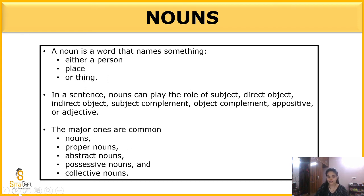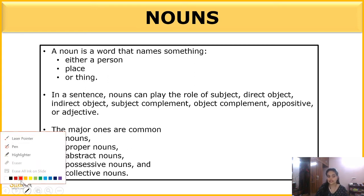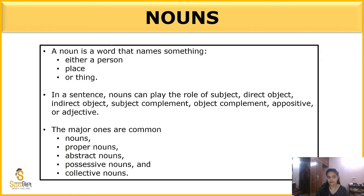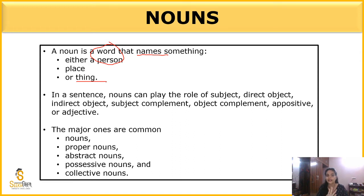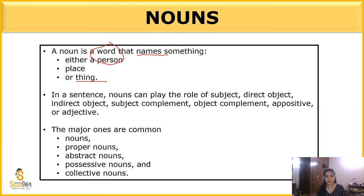Let's understand what is actually noun. Noun means a word — koi bhi word ho sakta hai — that names something. Either a person, place or thing. If I call someone's name, if a person's name is Ram, that is a noun because it refers to a particular person. If I talk about glass, that is the power of noun.